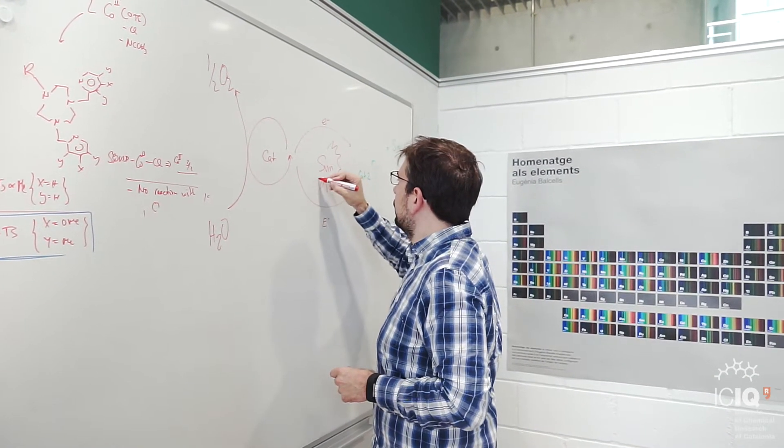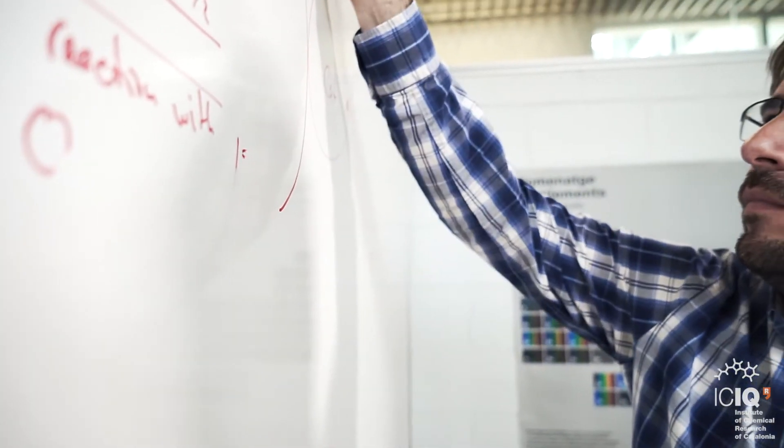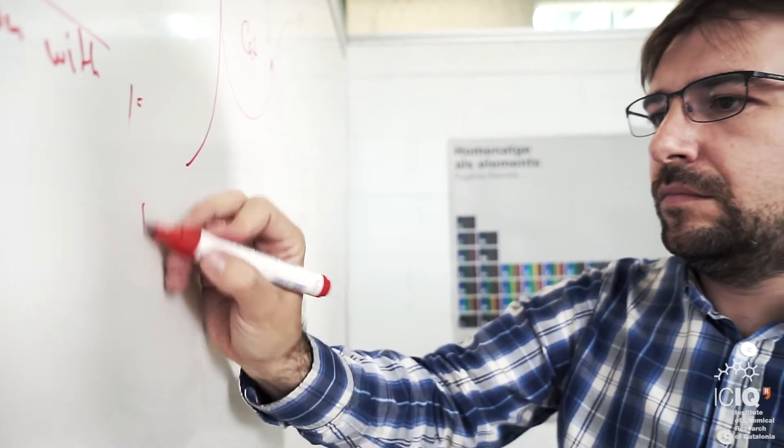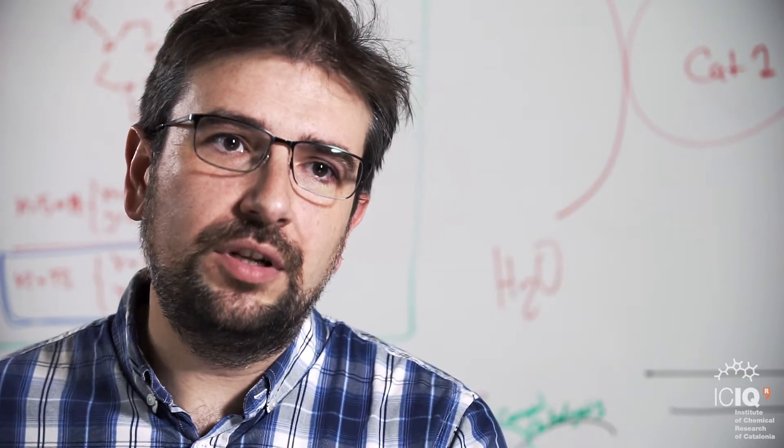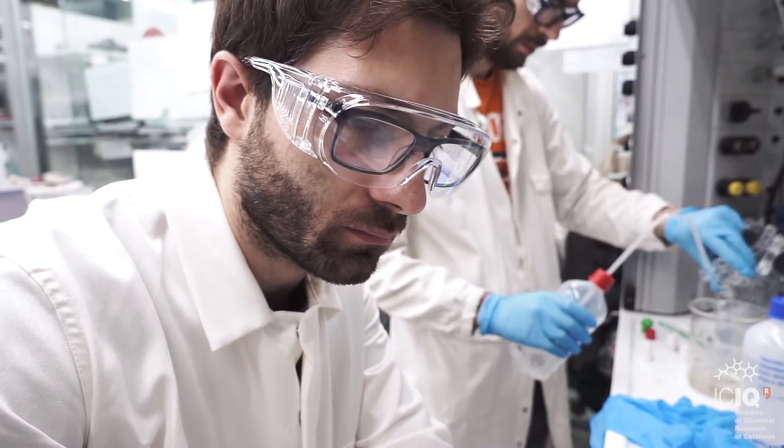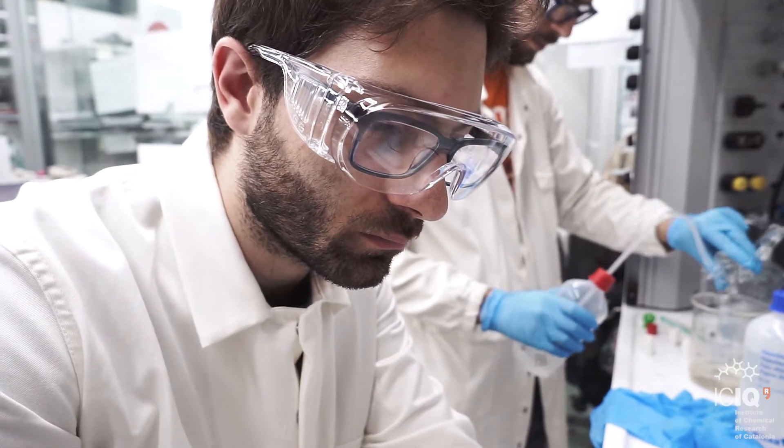One of the main objectives of our group is to develop greener chemistry. We like to do so by developing concepts derived from artificial photosynthesis. In artificial photosynthesis, what we try to do is mimic nature in order to harness sunlight and transform it into fuels.